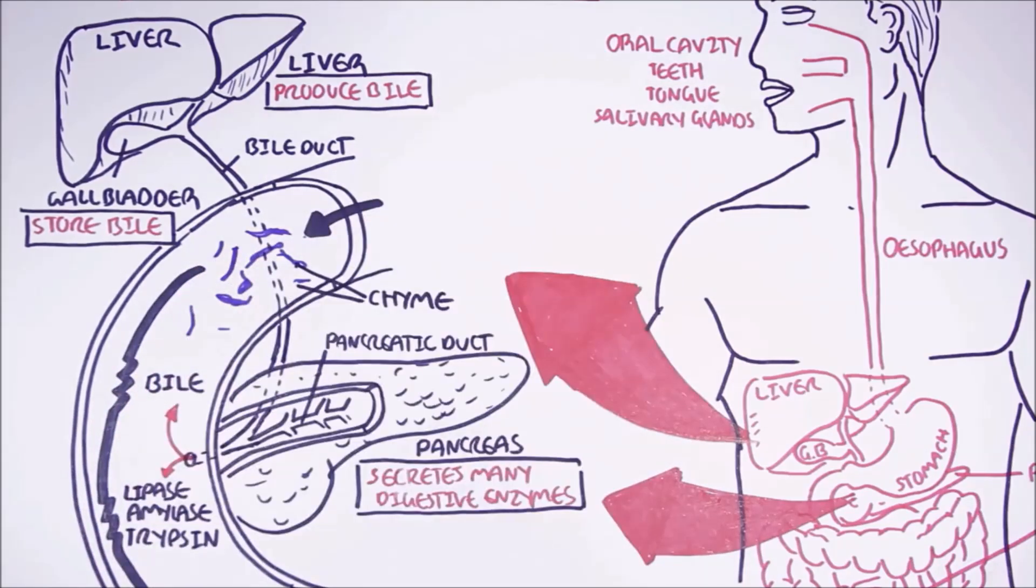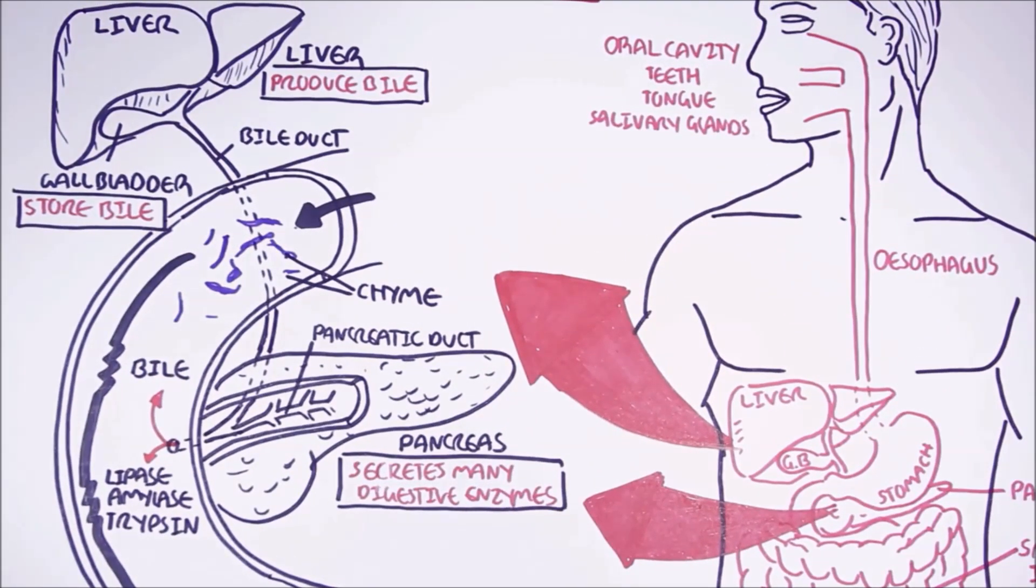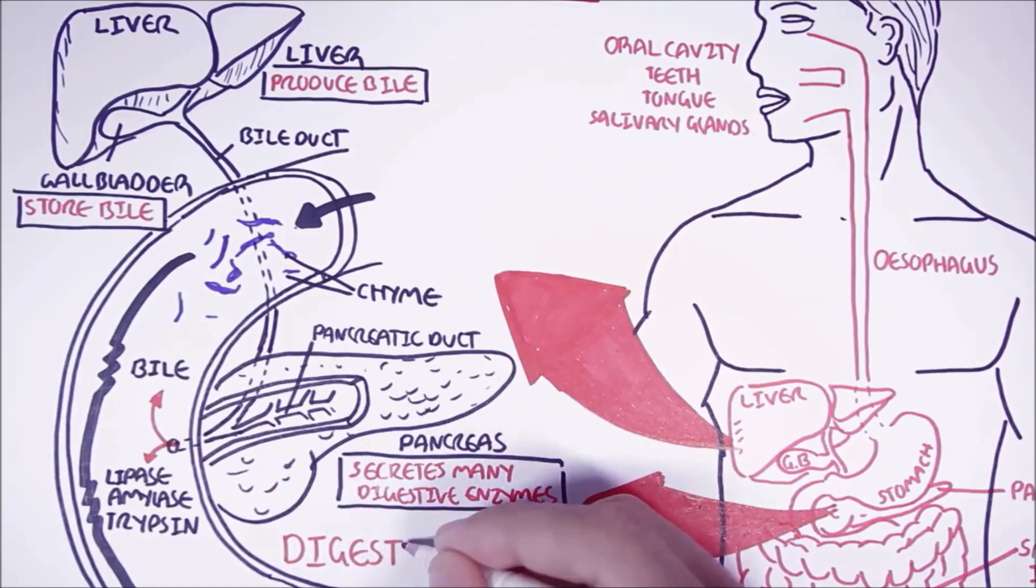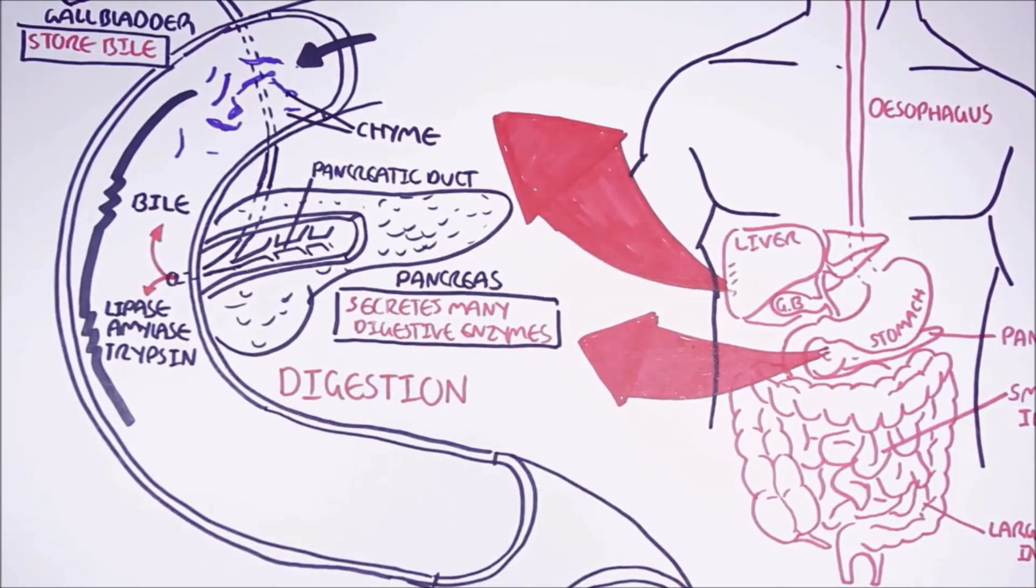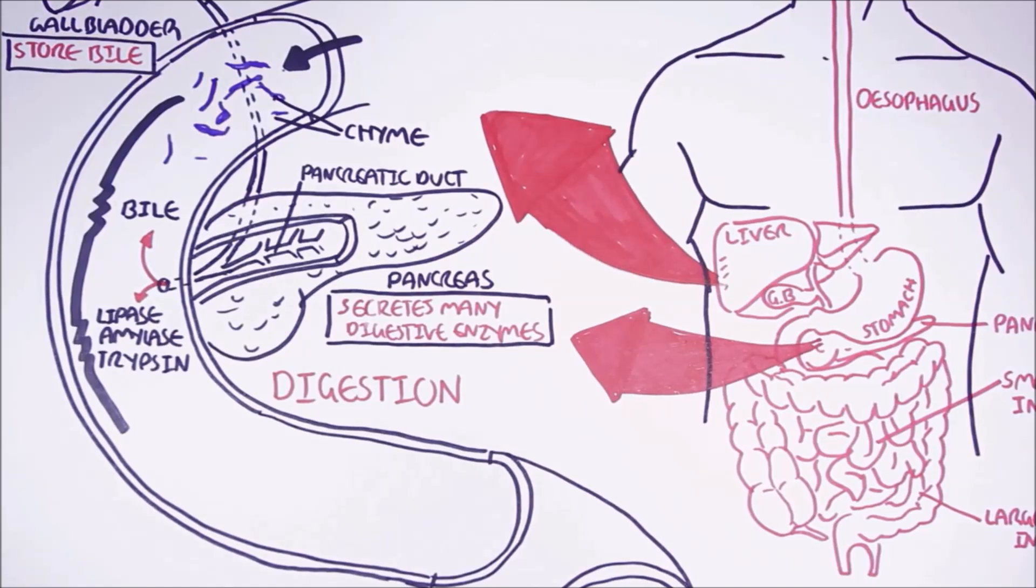The chyme will encounter all these enzymes and will be digested further. The small intestine itself has some enzymes called brush border enzymes that are found on the cell membranes.